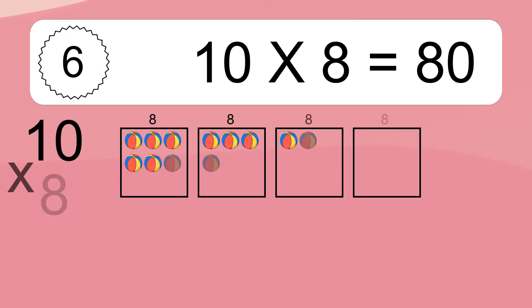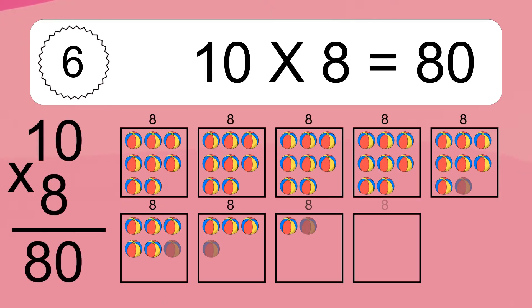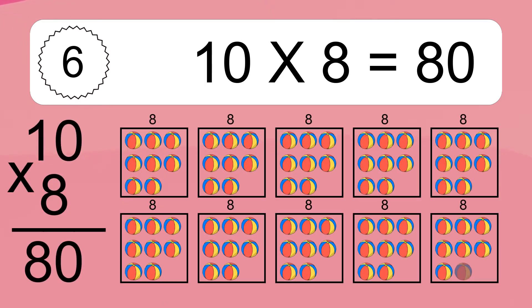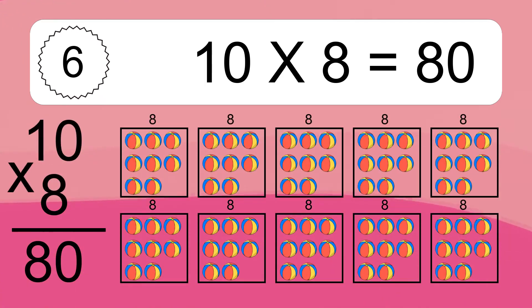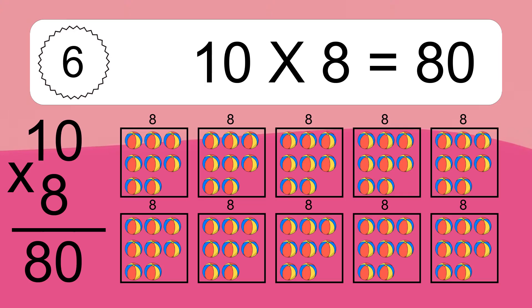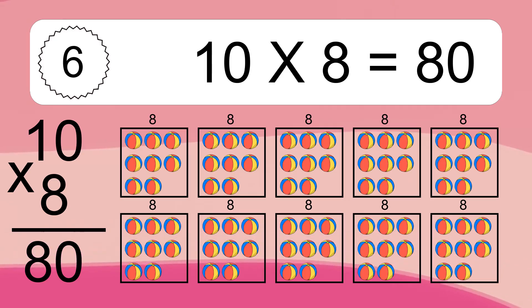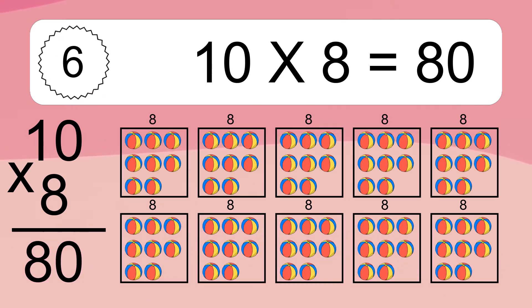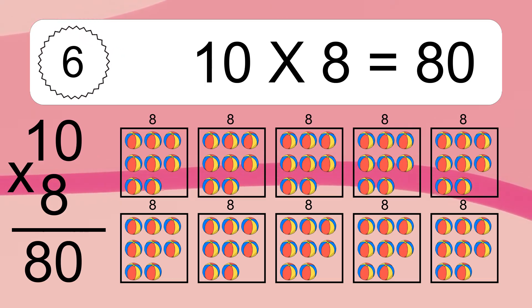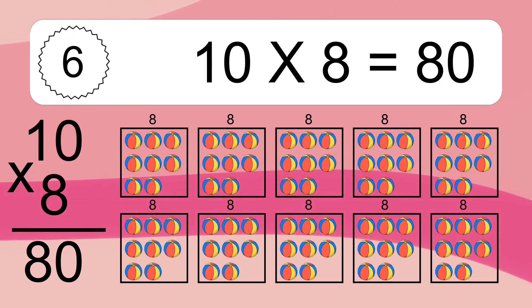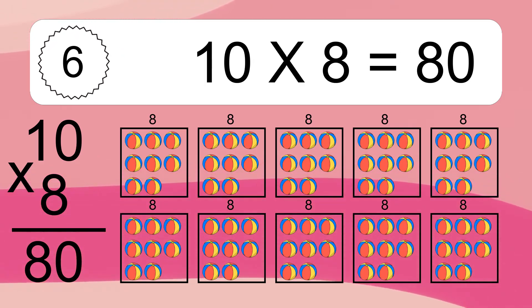10 times 8 equals what? 10 times 8 equals 80. We have 10 boxes, and each box has 8 colorful balls inside. If you count all the balls in all the boxes together, you will have 10 times 8 balls. This equals 80 balls.